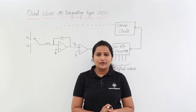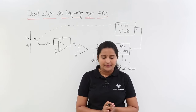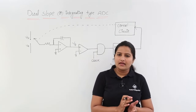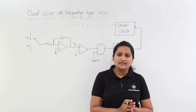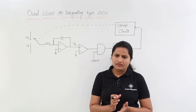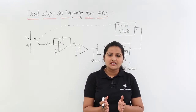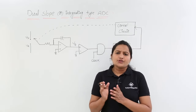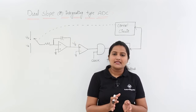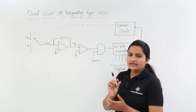In this class we are going to discuss about dual slope or integrating type ADC. In the last classes we discussed about so many ADCs like flash type ADC, parallel type ADC, and counter type ADCs. So now we are going to discuss one of the most accurate ADCs among all ADCs, that is dual slope or integrating type ADC.